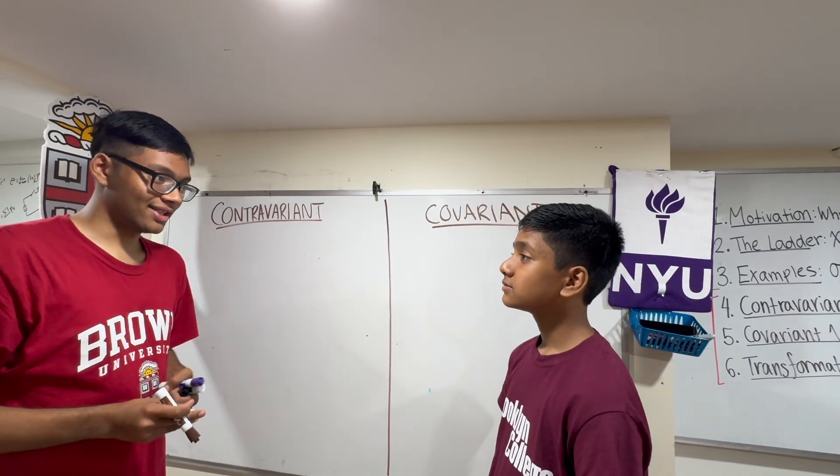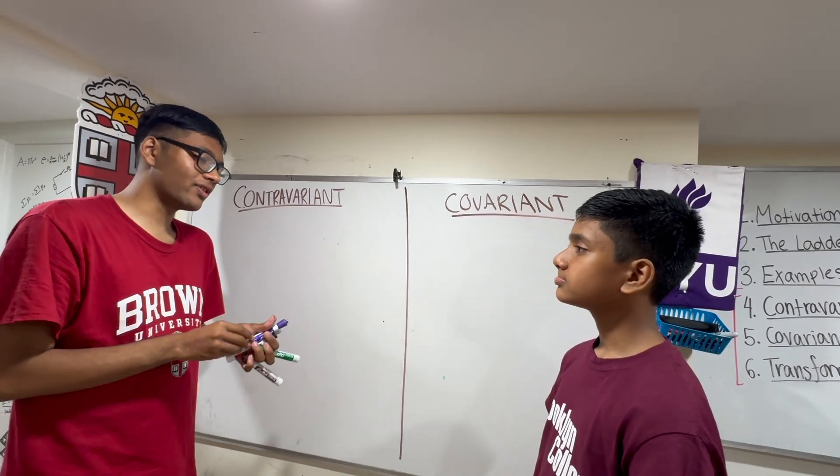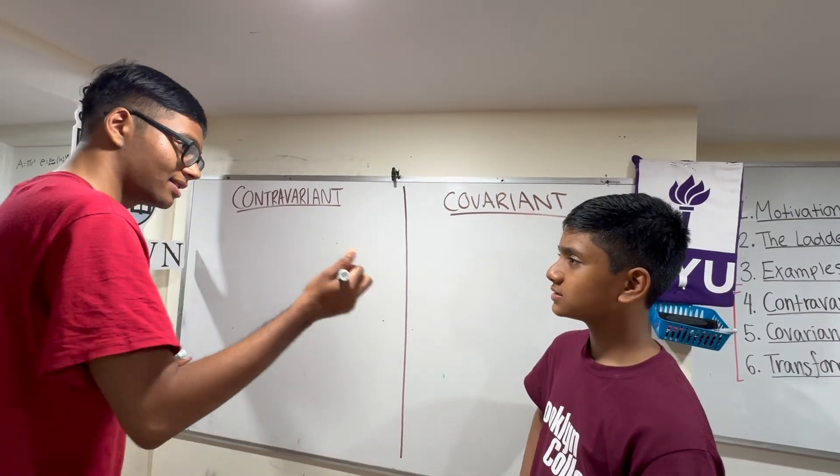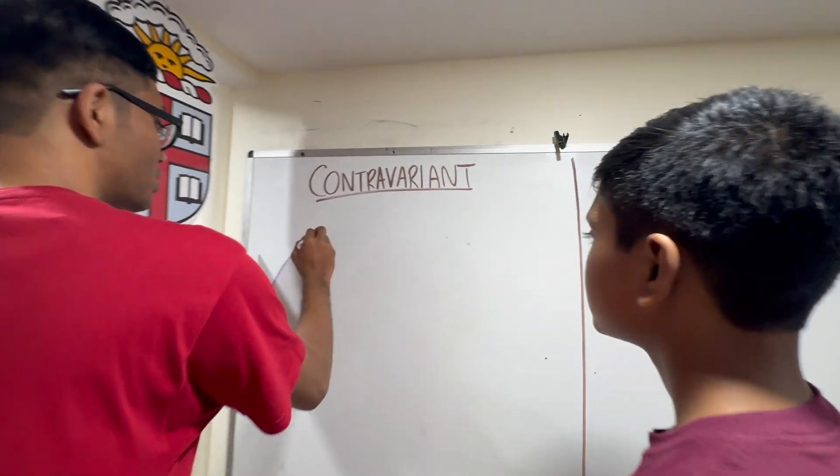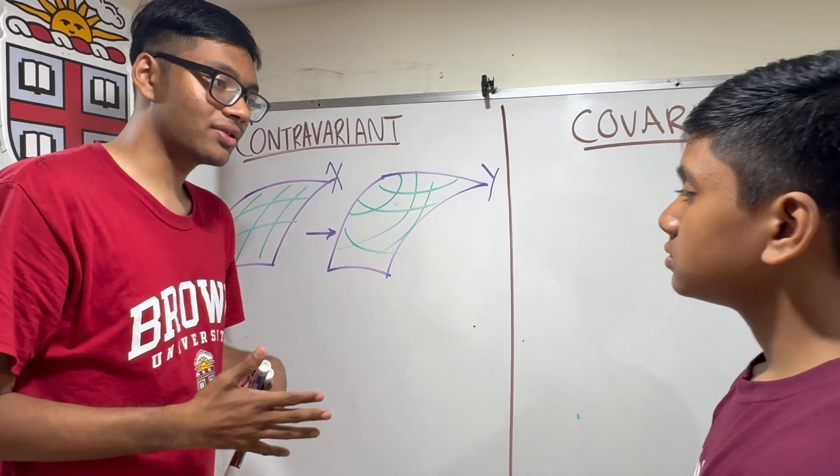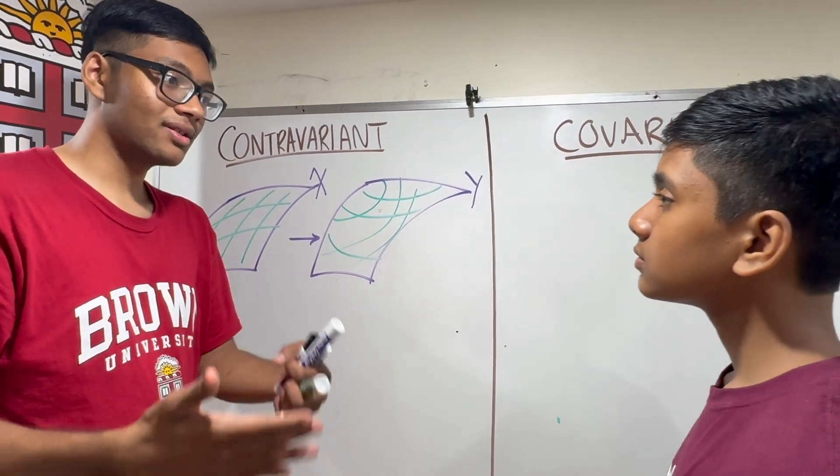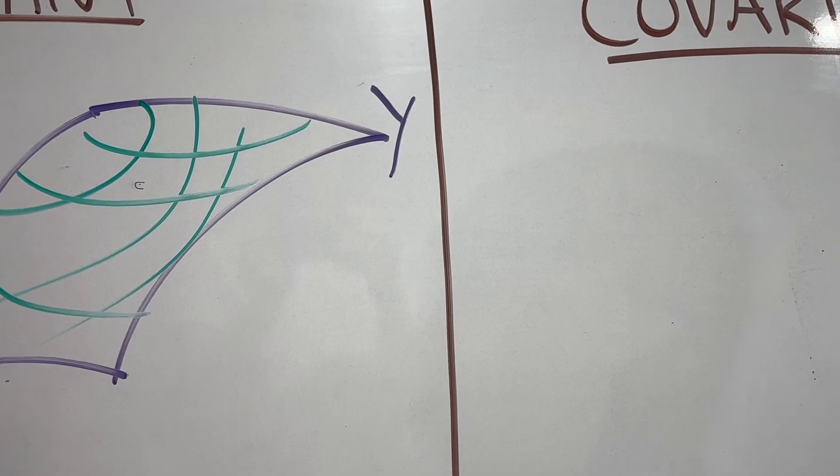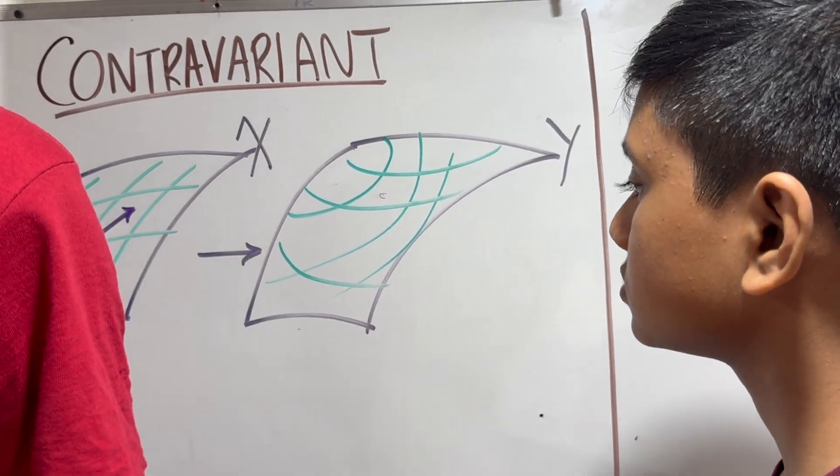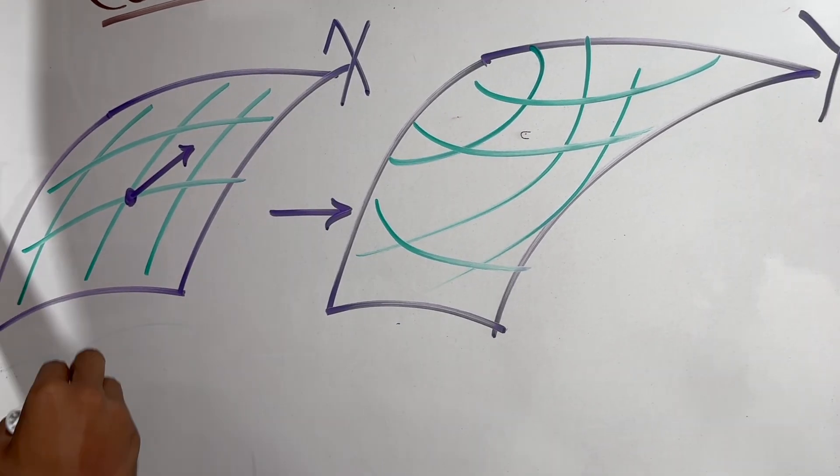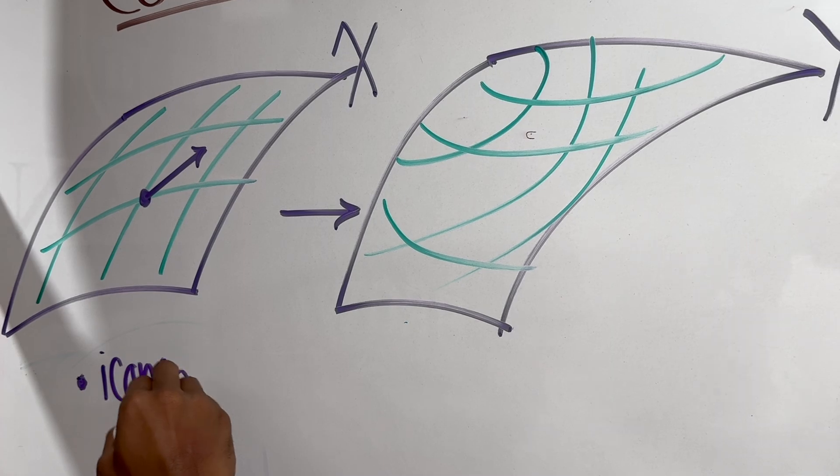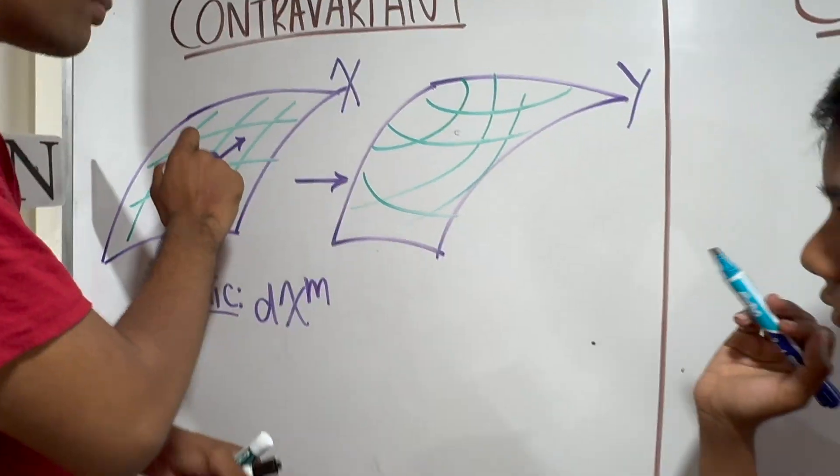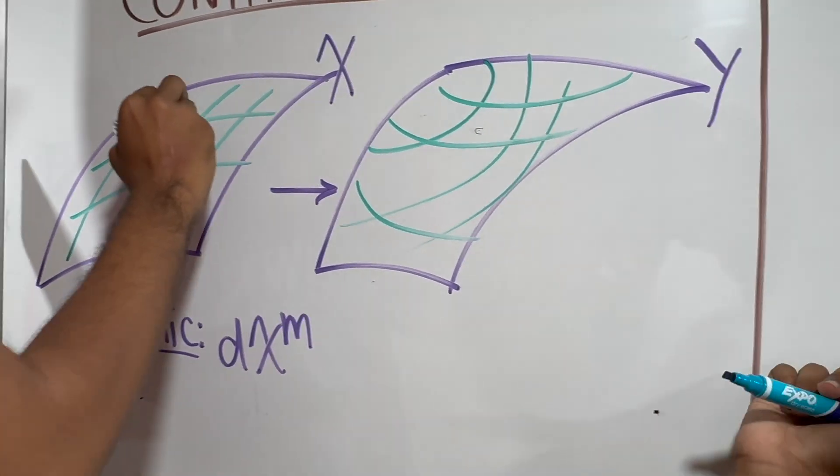Let's start with contravariant tensors. Now, the classic example of a contravariant tensor is as follows. It's a small step. Isn't that like dx? Let me show you what I mean. Let's say you transition between two coordinate frames. Contravariant vectors are very simple. A small step, a small differential step. Let me take a small step in the x coordinate frame here. And let me call this small differential step dx to the m power. So this is the iconic example of a contravariant tensor is dxm.